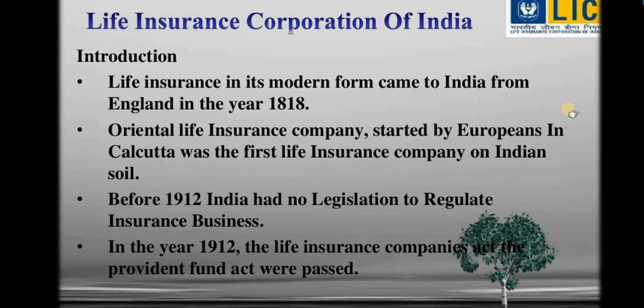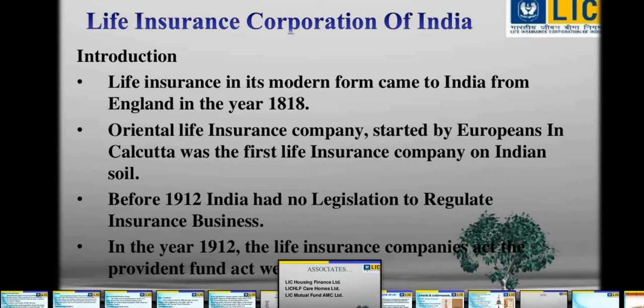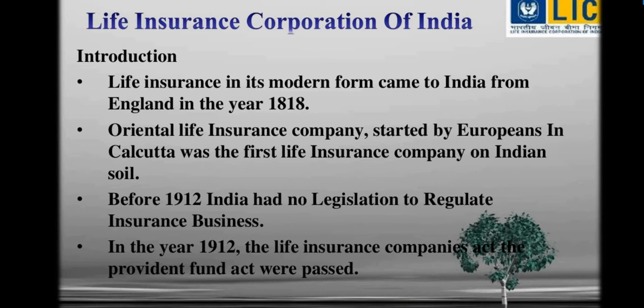In this class we study about Life Insurance Corporation of India. Life insurance in its modern form came to India from England in the year 1818. The first life insurance company started by Europeans in Kolkata was the Oriental Life Insurance Company, which was the first insurance company on Indian soil.